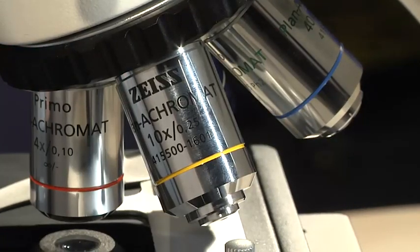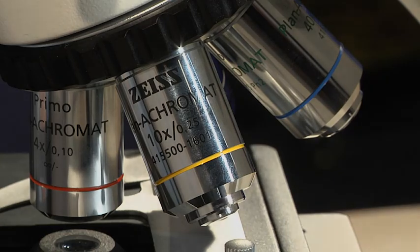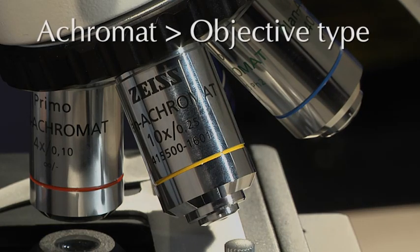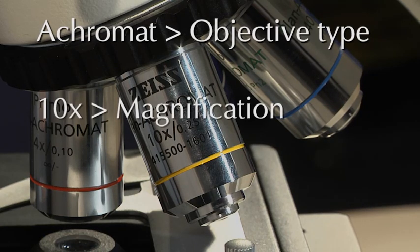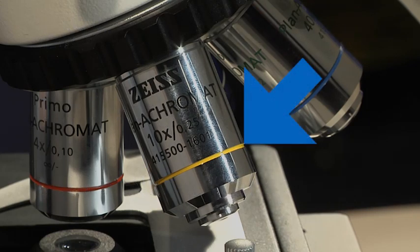It is important to have a look at the objective specifications. You find the objective type, the magnification, the numerical aperture, and the magnification color code on the objective body.